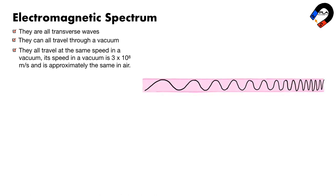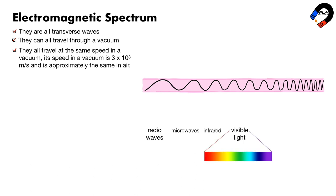The electromagnetic spectrum is arranged in a specific order based on wavelengths or frequencies. The main groupings of the continuous electromagnetic spectrum are radio waves, microwaves, infrared, visible light — red, orange, yellow, green, blue, indigo, violet — ultraviolet, X-rays, and gamma rays.